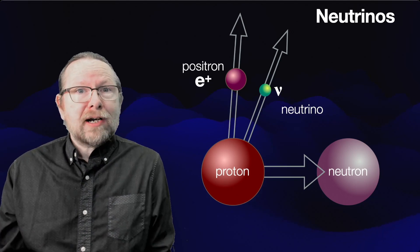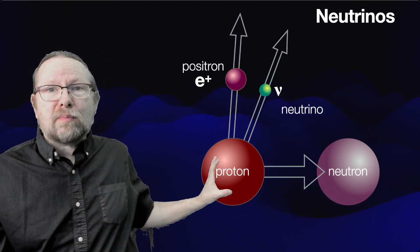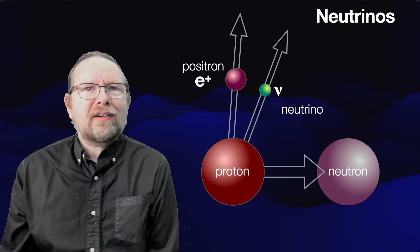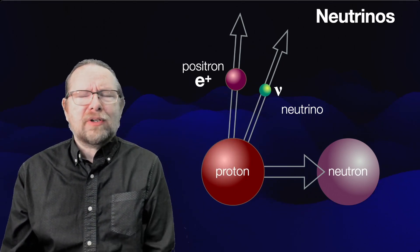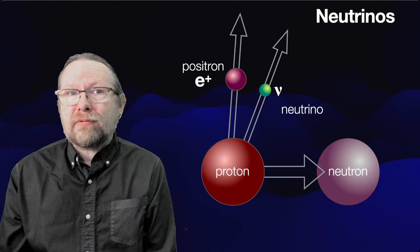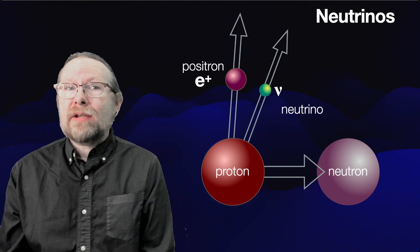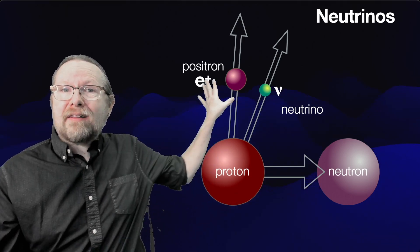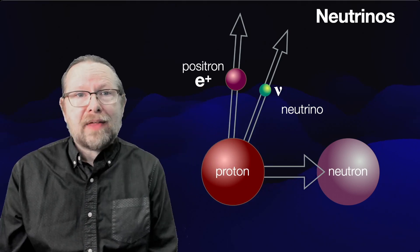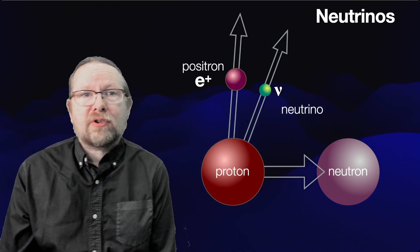But neutrinos do interact with matter, because we do detect them. If they didn't interact with matter, a proton couldn't make one and we couldn't detect one in our neutrino detectors. So there has to be some other force, some other interaction that neutrinos feel — one that's not the electrical interaction that protons, electrons, and positrons feel.